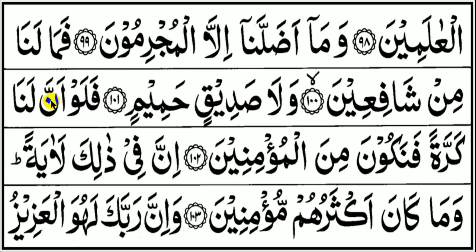Falau anna lana karratan. Fanakuna minal mu'minin. Falau anna lana karratan fanakuna minal mu'minin. Falau: a-ku'u madlayin. Anna: gunnah musyaddadah dua ketukan. Lanak: mawtobi'i dua ketukan. Karratan: tanwin mendengung samar menuju pada huruf fa, bacaan ikhfa, panjang dua ketukan. Fanakuna: mawtobi'i. Minal: alif lam komariyah. Mu: dipendekkan bacaannya. Minin: mad arid disukun enam ketukan.